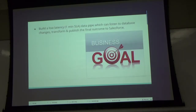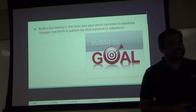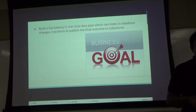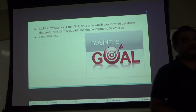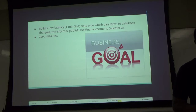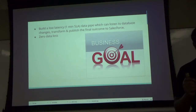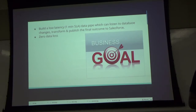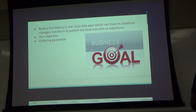What is the business goal? Very simple: build a real-time, low-latency pipeline. In our case, the SLA was one minute. The pipeline listens to database state changes, transforms and publishes the data to Salesforce — though it need not be Salesforce, you can publish to any other destination. When we say transform, it implicitly means streaming joins as well. The other requirements were zero data loss — unlike ad platform or clickstream pipelines where minimal data loss is acceptable, for financial and customer data this is a major requirement — plus ordering guarantee. This is a good recipe for adding a lot of complexity.